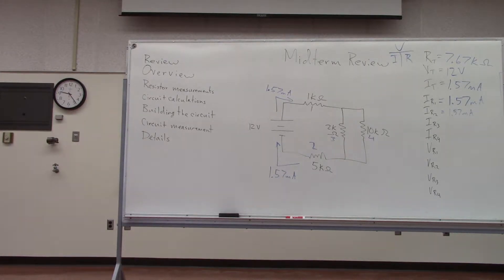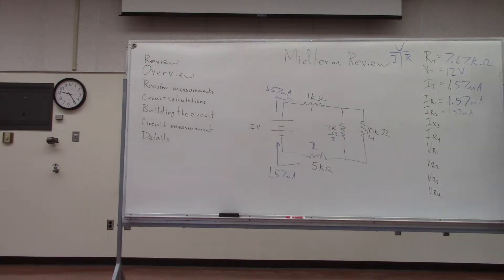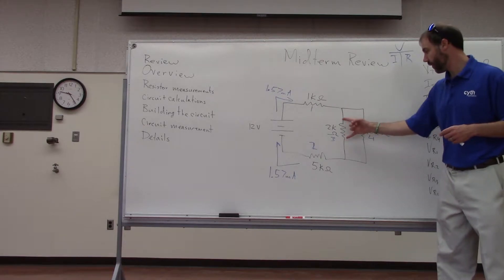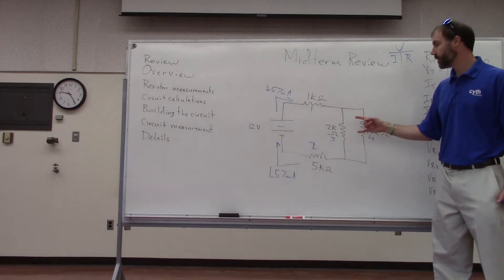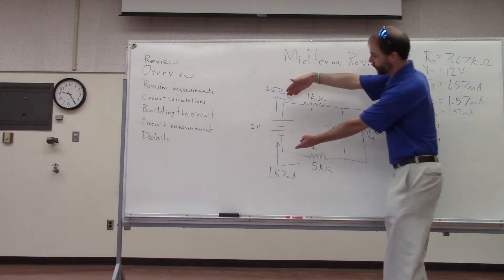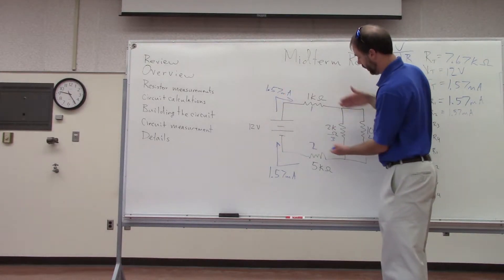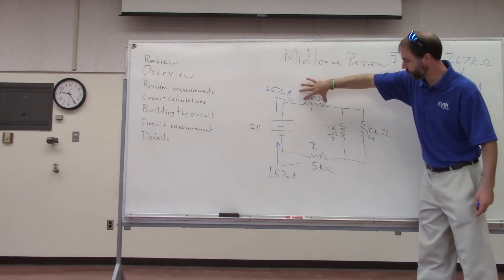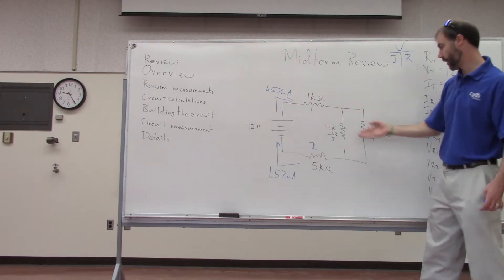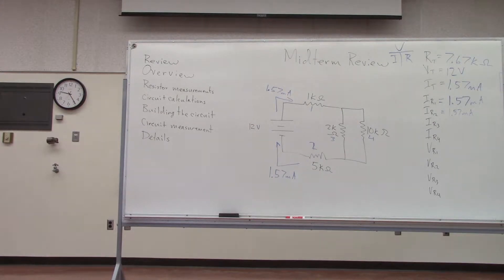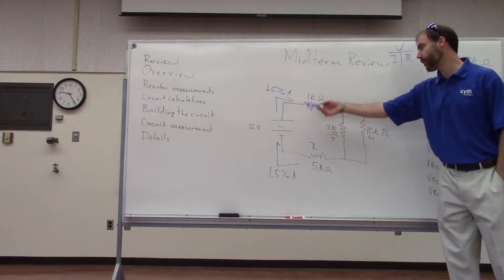What can we calculate next? The voltage on the two parallel resistors is going to be the same, but it's not going to be 12 volts — we have 12 volts across the entire circuit, but we lose some voltage at R1 and R2. So we should calculate how much we lose.